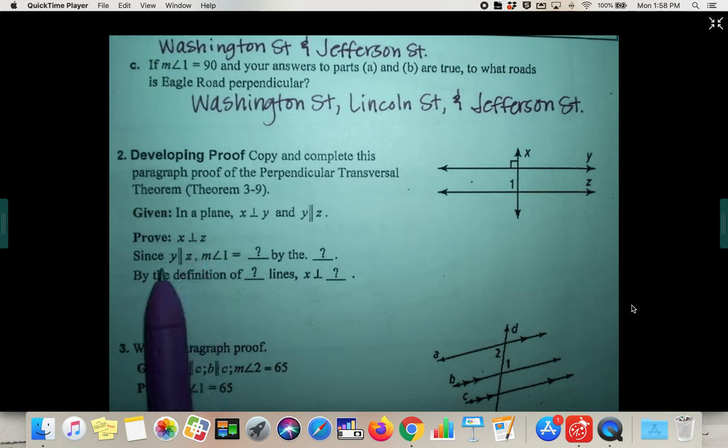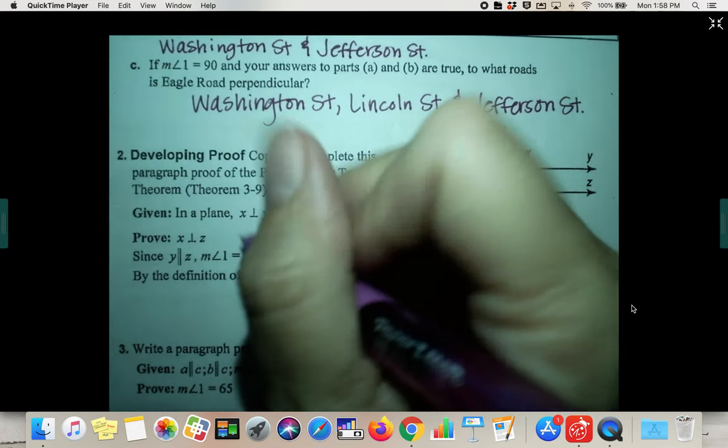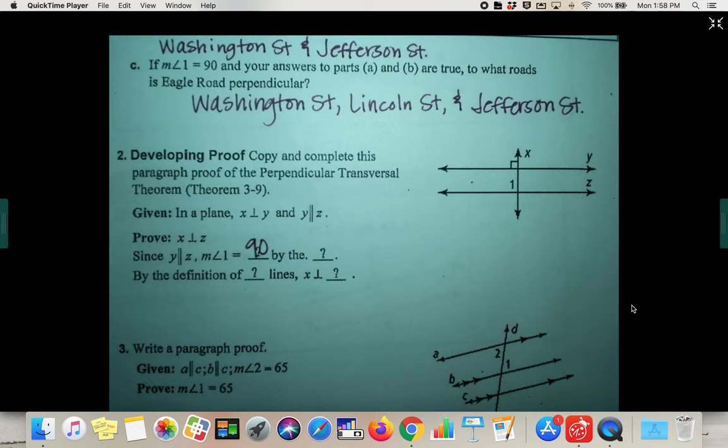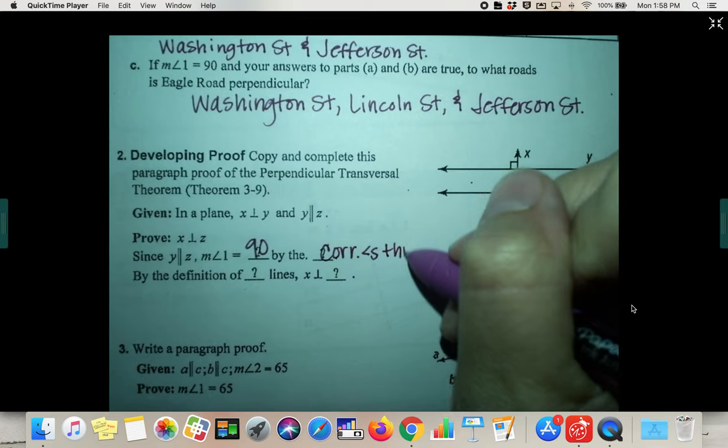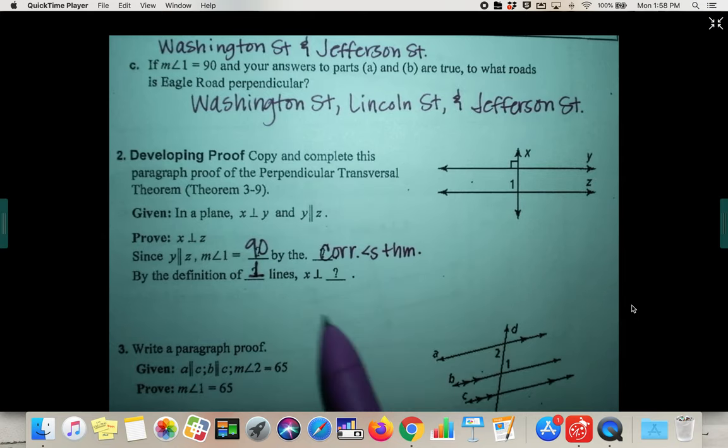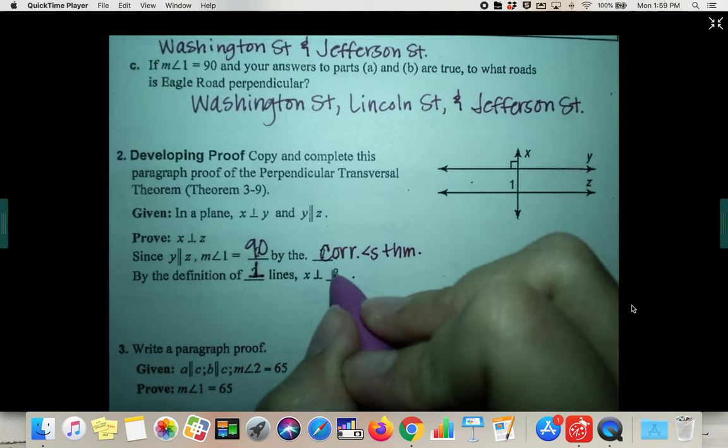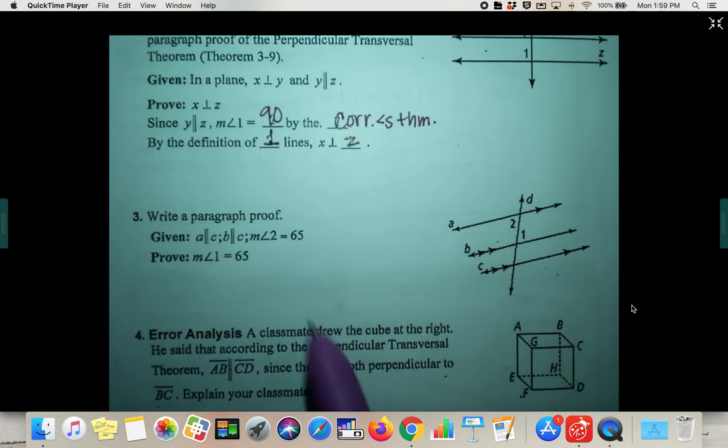Since Y is parallel to Z, the measure of angle one would be 90 degrees by the corresponding angles theorem. I'm abbreviating corresponding angles theorem. And then by definition of perpendicular lines, X would be perpendicular to Z. Hopefully you would have been able to fill that in. And now we're going to try a paragraph proof.